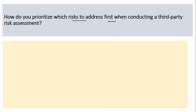Thank you for that question. When conducting a third-party assessment, prioritizing which risk to address first is crucial for effective risk management. The ultimate goal is to reduce risk to an acceptable level. My approach involves a structured methodology — using that word shows maturity toward the process — based on potential impact and likelihood of each risk, combined with understanding of the organization's risk tolerance and strategic objectives.